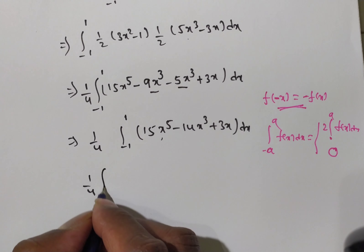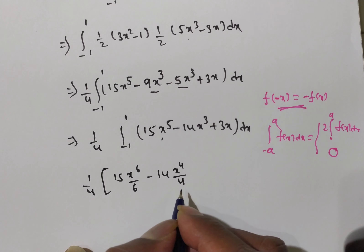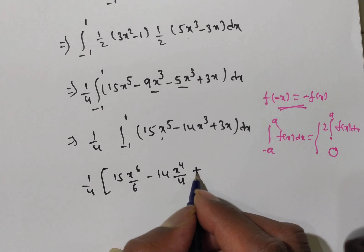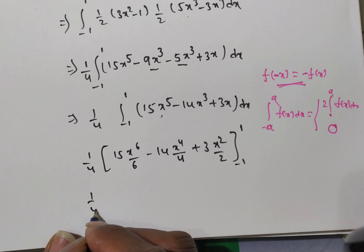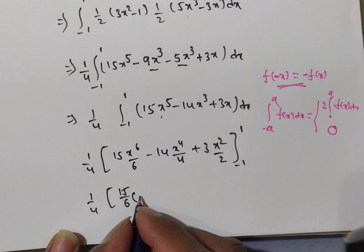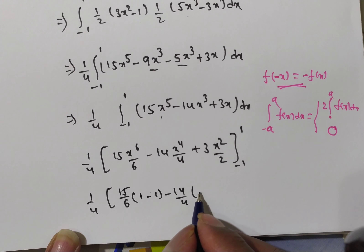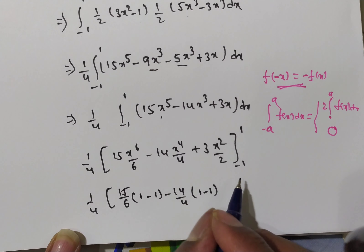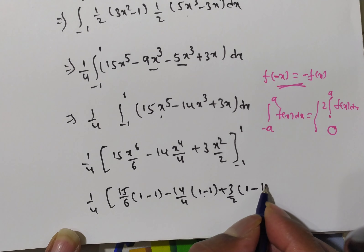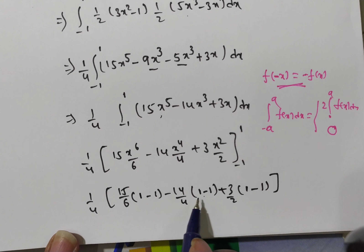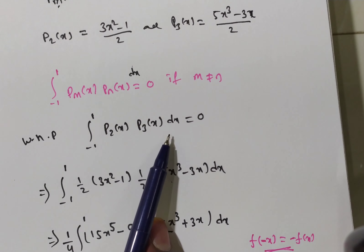Alternatively, we can prove it by direct integration: (1/4) times [15 times X to the power 6 divided by 6, minus 14 times X to the power 4 divided by 4, plus 3 times X squared divided by 2], evaluated from minus 1 to 1. Substituting the limits: 15/6 times (1 minus 1) gives 0; minus 14/4 times (1 minus 1) gives 0; and 3/2 times (1 minus 1) gives 0. So the total result is 0.